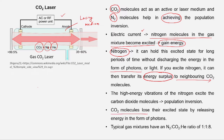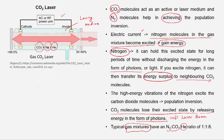When CO2 molecules return to the ground state, residual energy is given to the helium gas — a process called relaxation. In the gas mixture, nitrogen and carbon dioxide are in almost equal proportions, while helium — the relaxation gas — makes up the majority of the mixture.